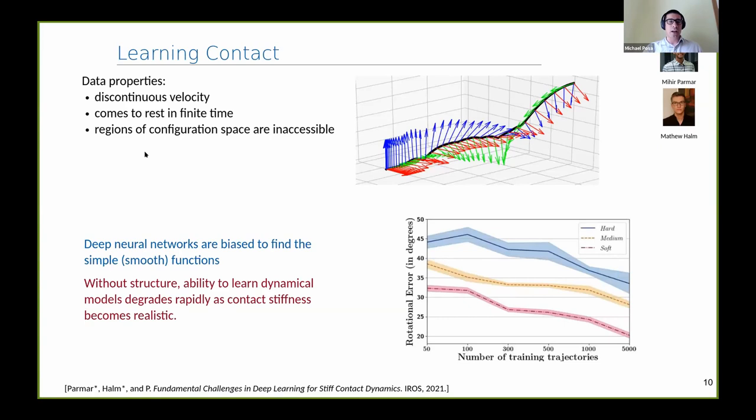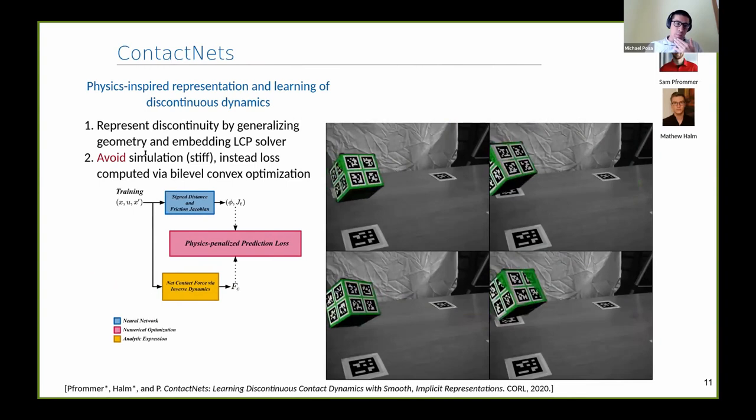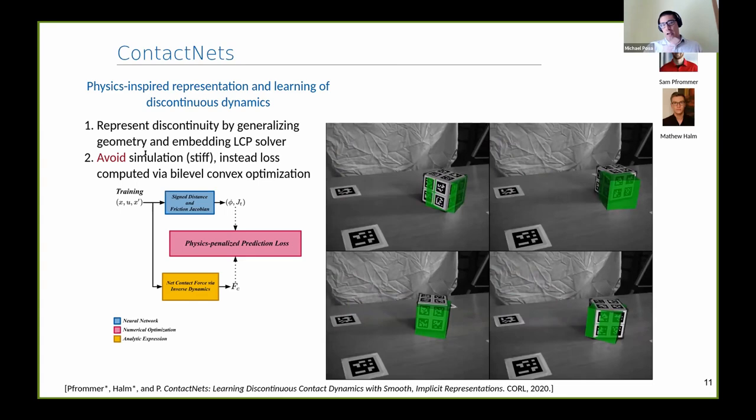What's going on, I would say, is that if you look at most of learning theory, there's some bias towards smoothness. Once you stop having smoothness, once your Lipschitz constant goes up, you start to see this degradation. What can we do instead? You can start embedding some non-smoothness into your learning process. In our case, we're going to represent discontinuity by taking some idea of geometry and generalizing it—essentially learning geometry of your neural network.